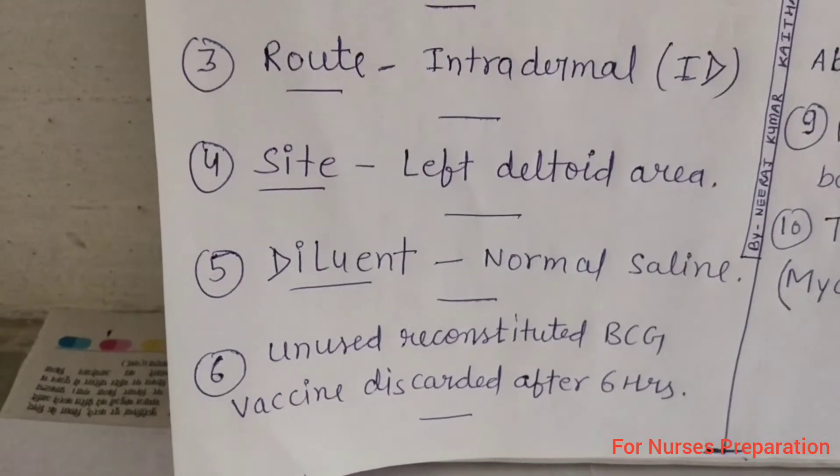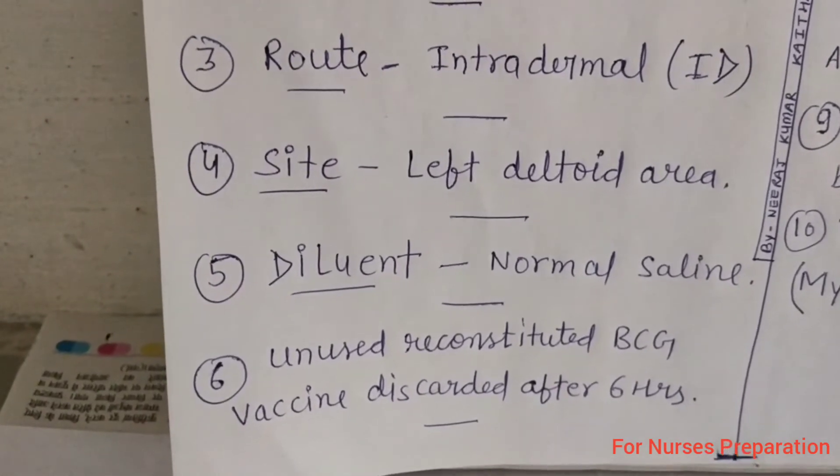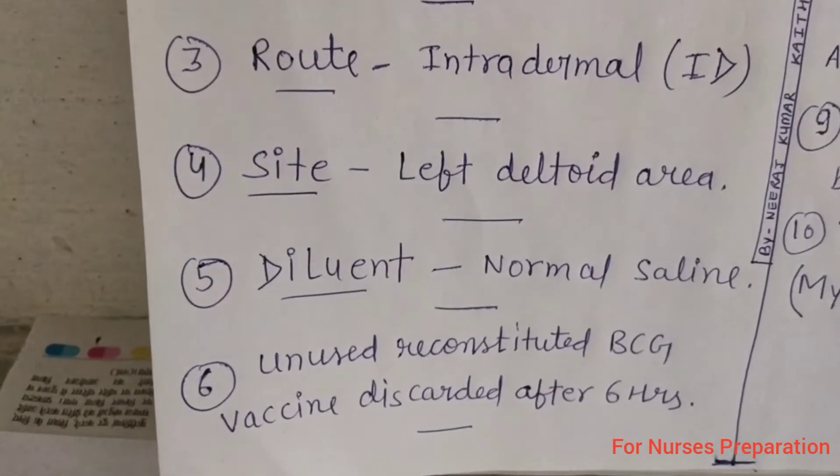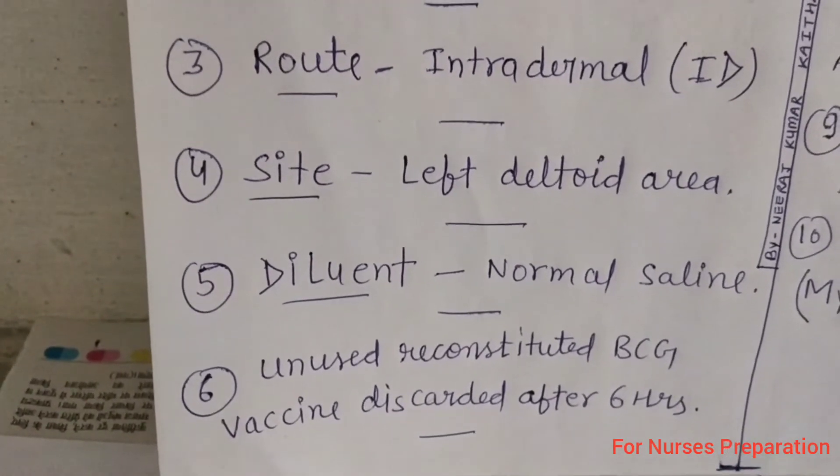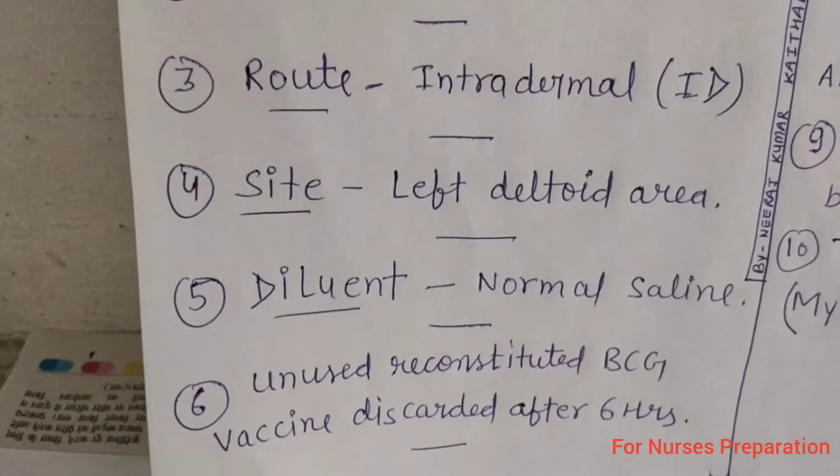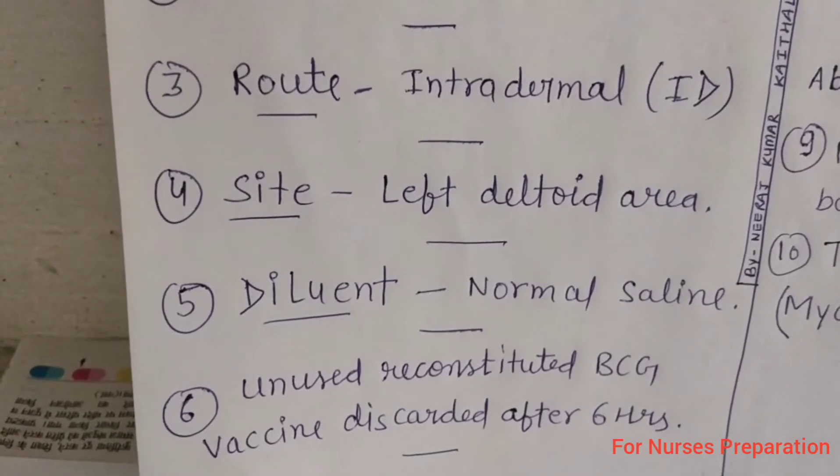Point number 6: Unused reconstituted BCG vaccine is discarded after 6 hours.